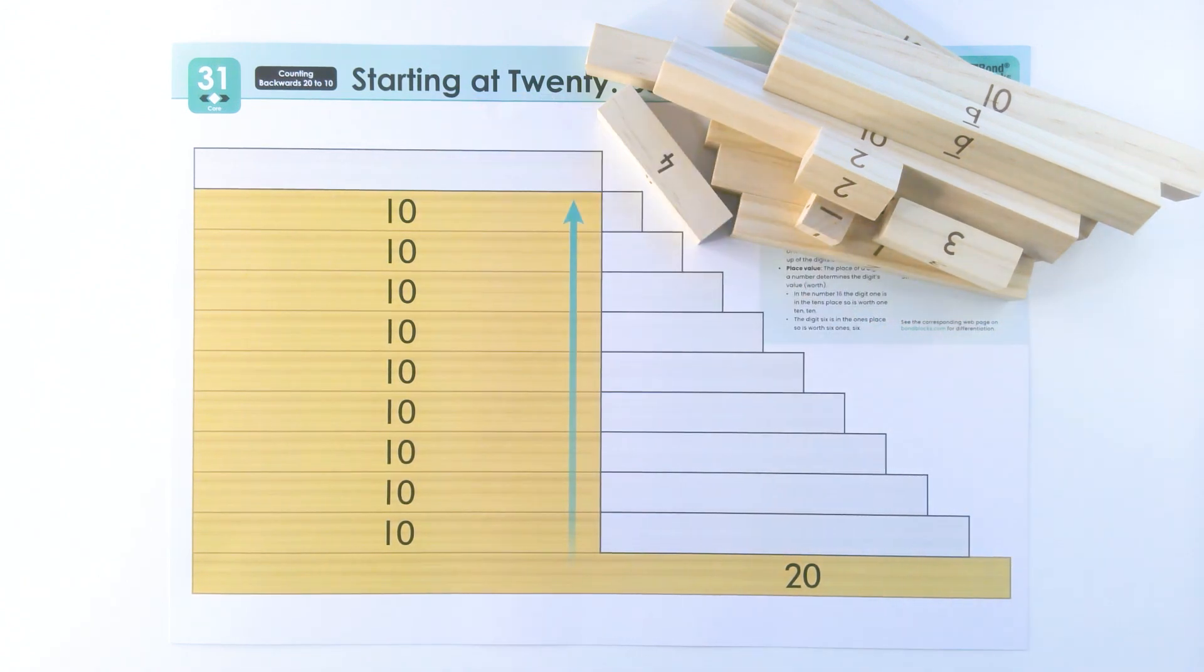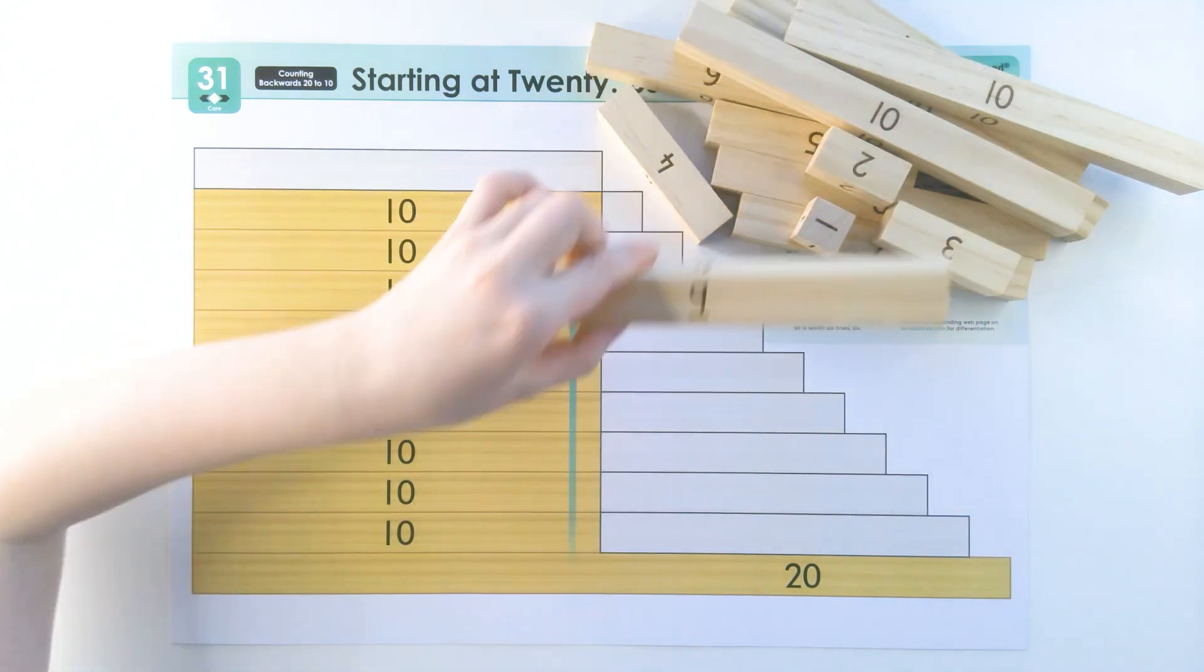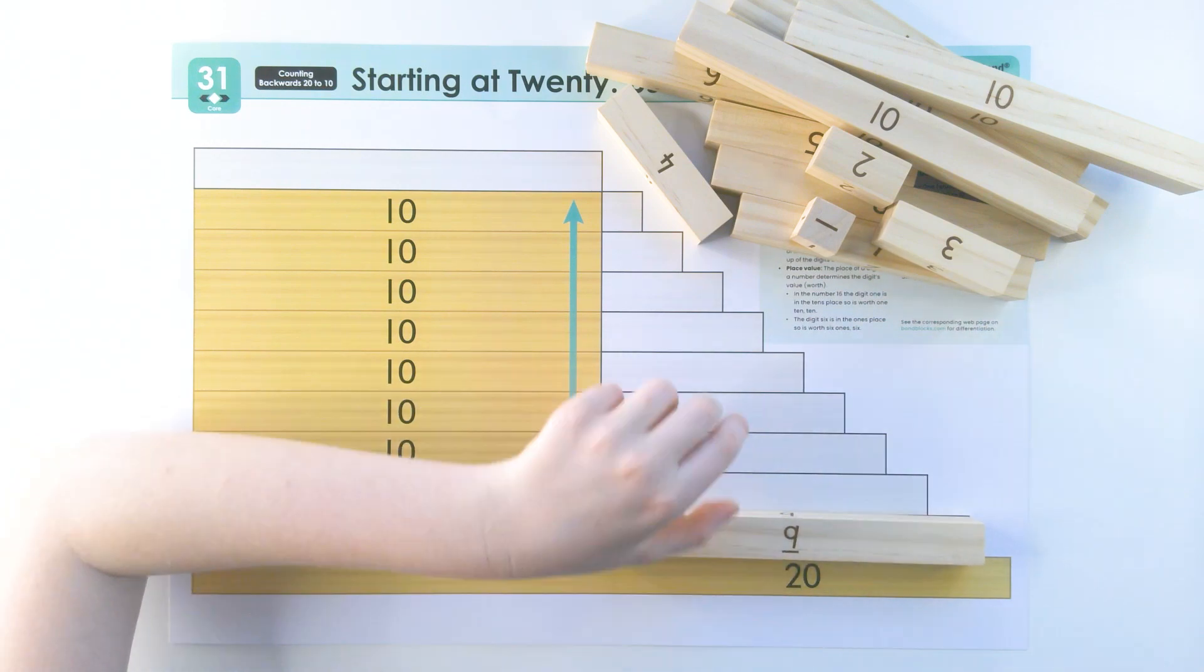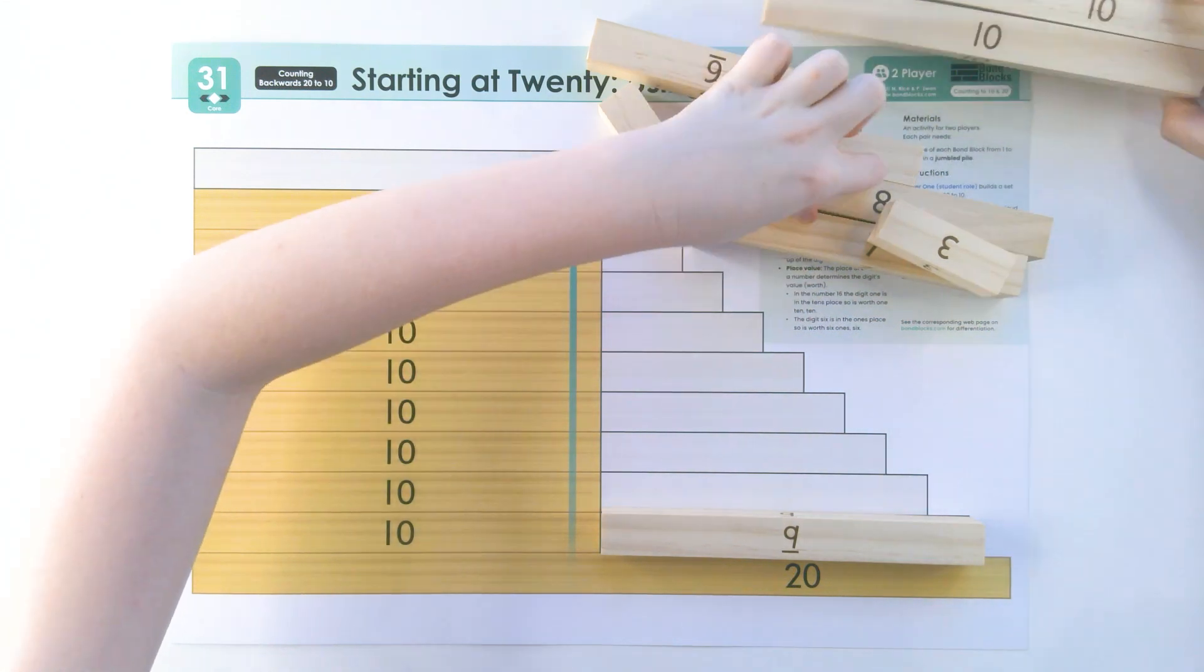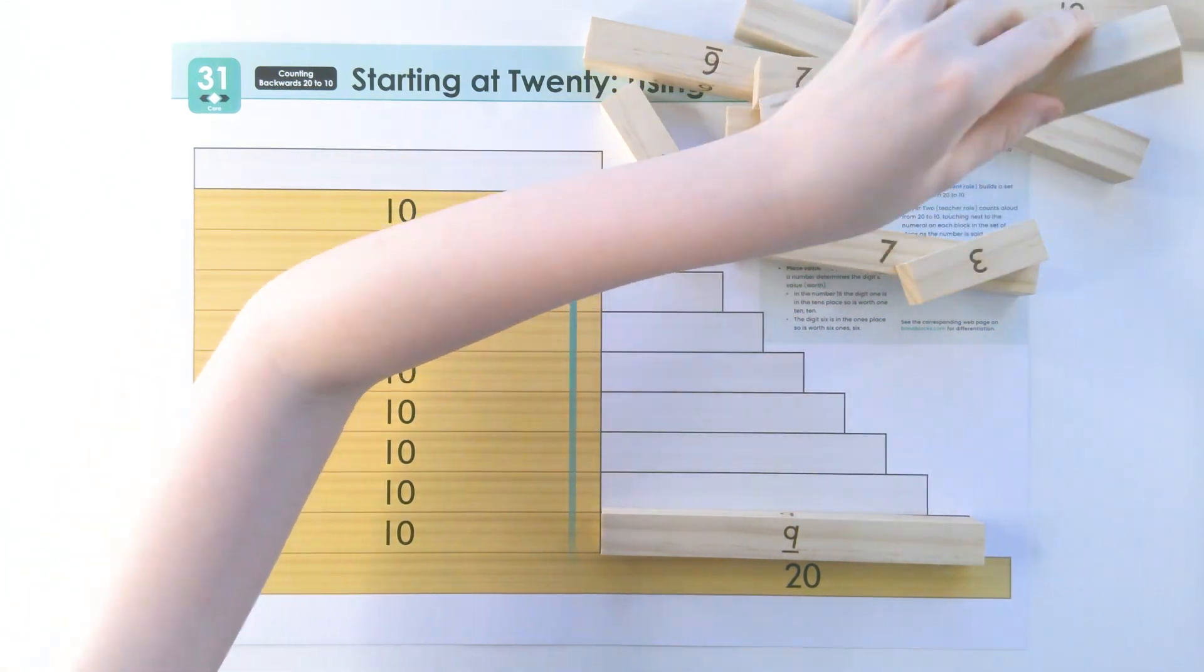So can you fill for me starting with the nine? And this is getting our brain ready to think about going backwards. Where is the eight? Okay. There it is.